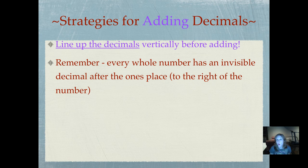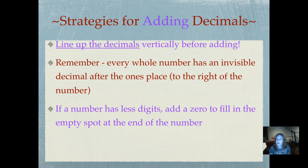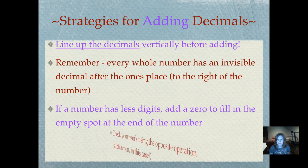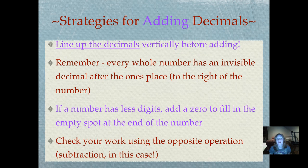Remember that if you're given a whole number and you can't find a decimal, there's always an invisible decimal after every whole number, right after that ones place. If a number has less digits, add a zero to fill in the empty spot at the end of a number. And always check your work using the opposite operation. We're going to be using subtraction today to check our work.